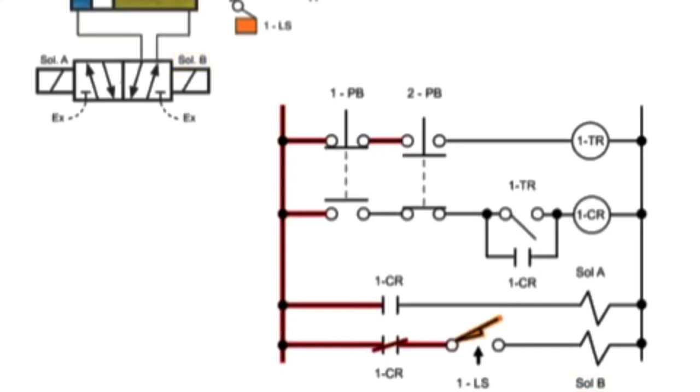The cycle cannot begin again until both push buttons are released. When the second push button is released, the timing relay is energized and the timing switch reset. The cycle is now ready to begin again when both push buttons are engaged.